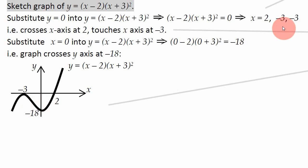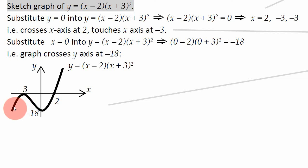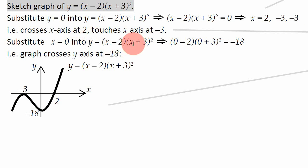Getting x equals minus 3 twice basically means the graph is touching the x axes at minus 3, not really crossing it. It's hitting the x axes at minus 3 and hitting it again at minus 3 — so it touches the x axes there. So we've found where it crosses and where it touches the x axes.